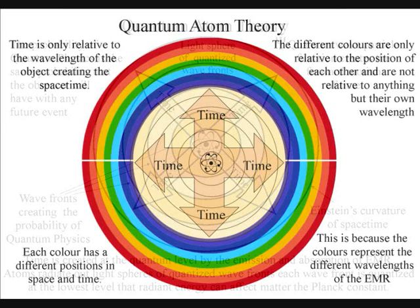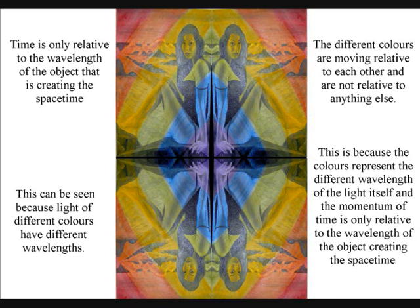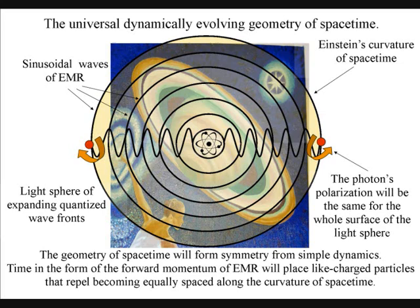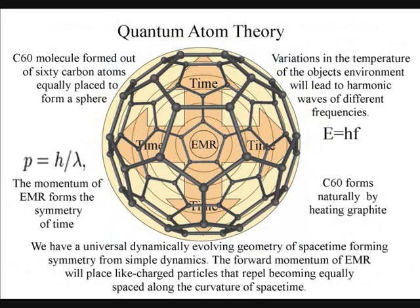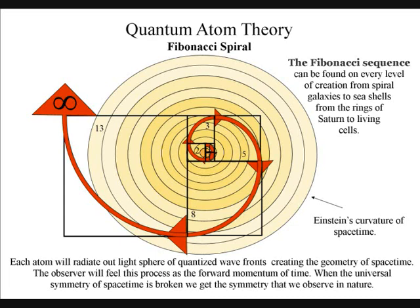We have a universal dynamically evolving geometry of space-time, forming symmetry from simple dynamics. The forward momentum of electromagnetic radiation will place light-charged particles that repel, becoming equally placed along the curvature of space-time. Only a slight distortion in the space-time symmetry will spiral out, creating the imperfect symmetry of the observer.